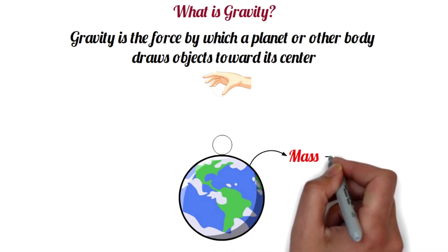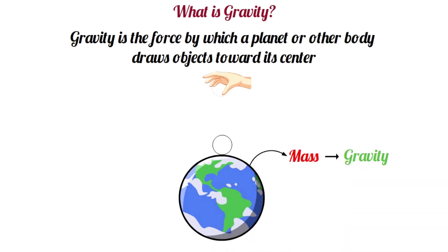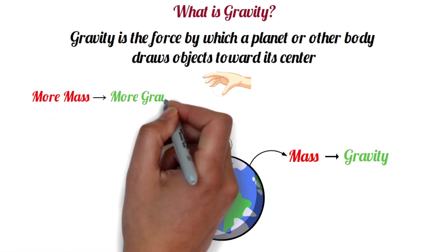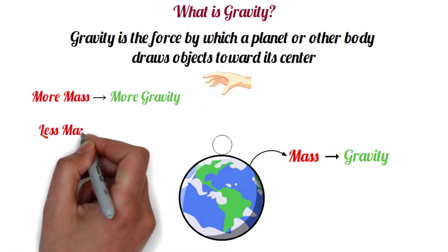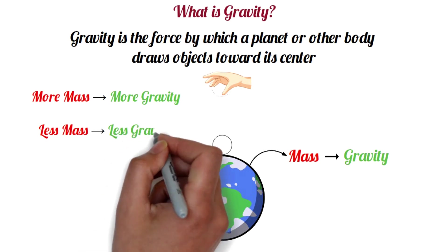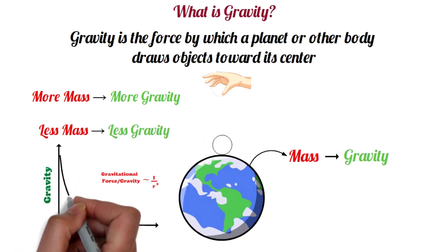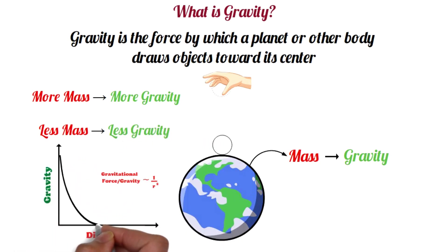Anything that has mass also has gravity. Objects with more mass have more gravity and objects with less mass have less gravity. Gravity also gets weaker with distance. So the closer objects are to each other, the stronger their gravitational pull is.